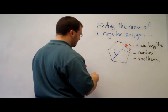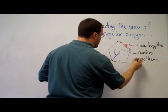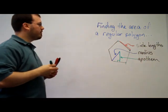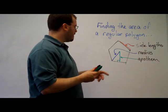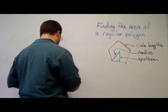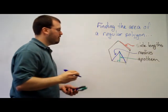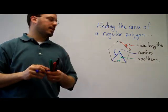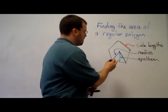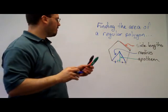And then finally, the apothem. The apothem is a segment that goes from the center of the polygon and hits one of the sides at a right angle. So it happens to be the altitude of this isosceles triangle. And we know from previous lessons that the altitude of an isosceles triangle bisects the side that it's hitting. So it's also a median.